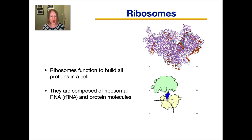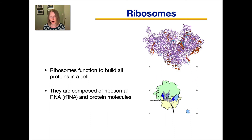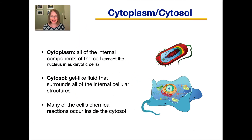Here's a little animation of a ribosome in the process of making a protein — you'll learn more about this later. Lastly, we have the cytoplasm and the cytosol. The cytoplasm refers to all of the internal components of the cell — everything within the plasma membrane. In eukaryotic cells, it's actually everything except the nucleus, the ball in the middle.